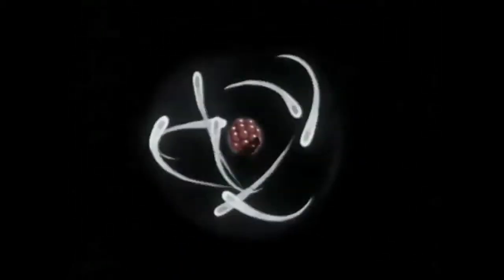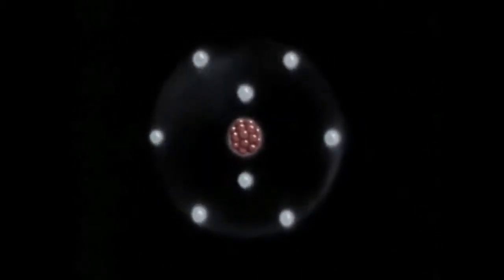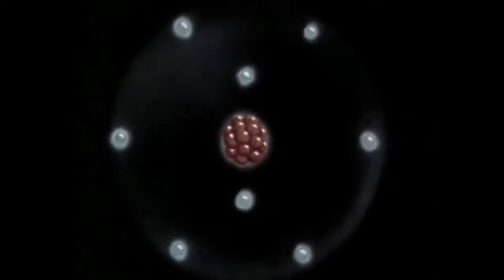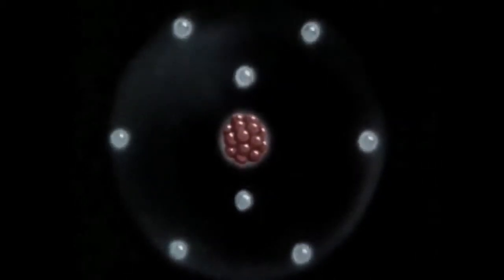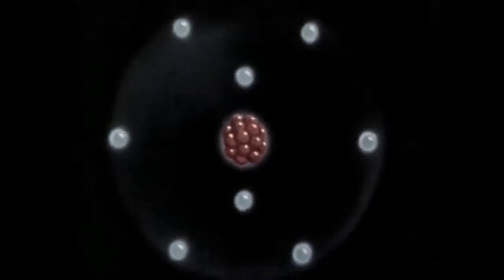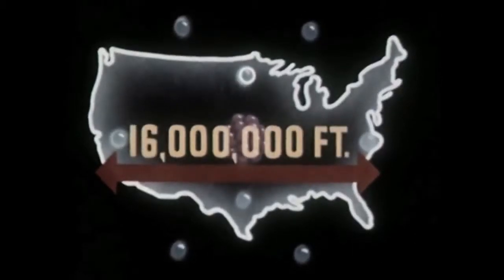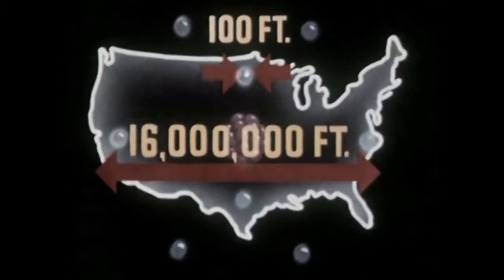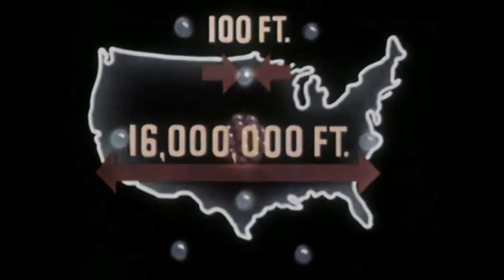let's assume that we can stop the action within the atom. And further, let's acknowledge that this is a symbol representing the atom and not an attempt to show it as it actually is. It is impossible to show the correct relative proportions of an atom on this screen. For example, if an atom could be as large as the United States, one of its electrons would be only about 100 feet across. Therefore, to tell our story, we must resort to a symbol.